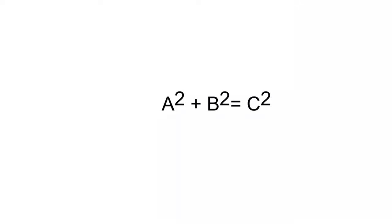So what I want to do is get rid of this square. In order to do that I have to square root the c squared. Once I do something to one side of the formula I have to do it to the other side. So it ends up being c is equal to the square root of a squared plus b squared.